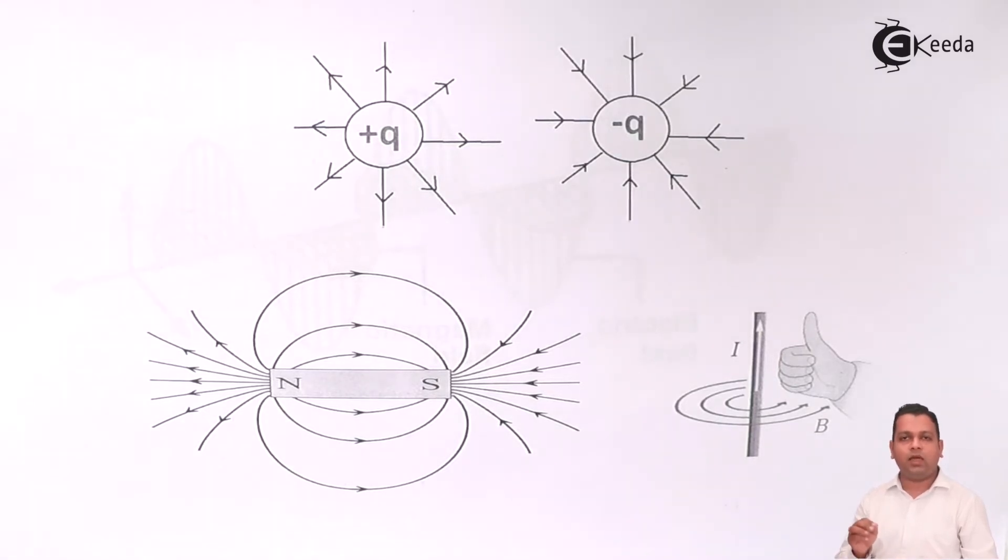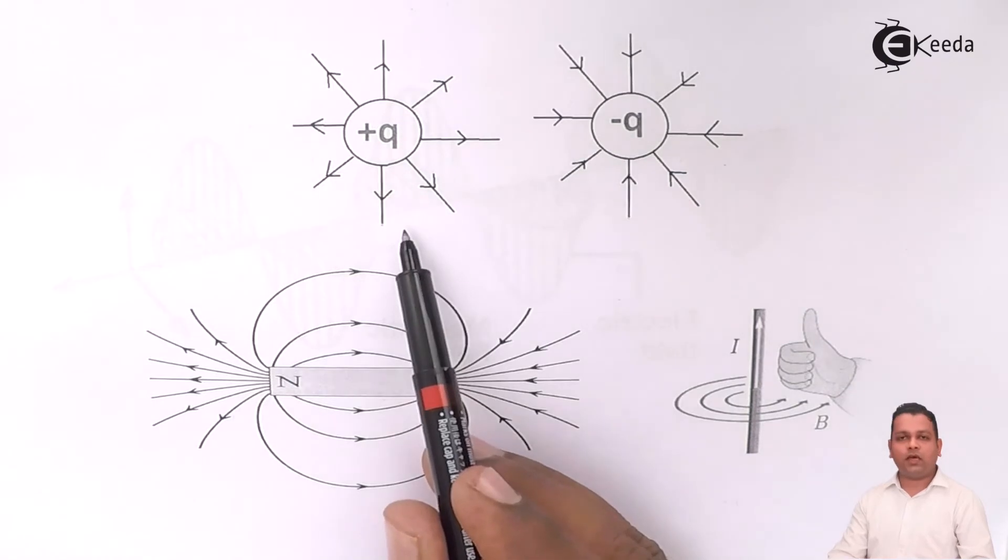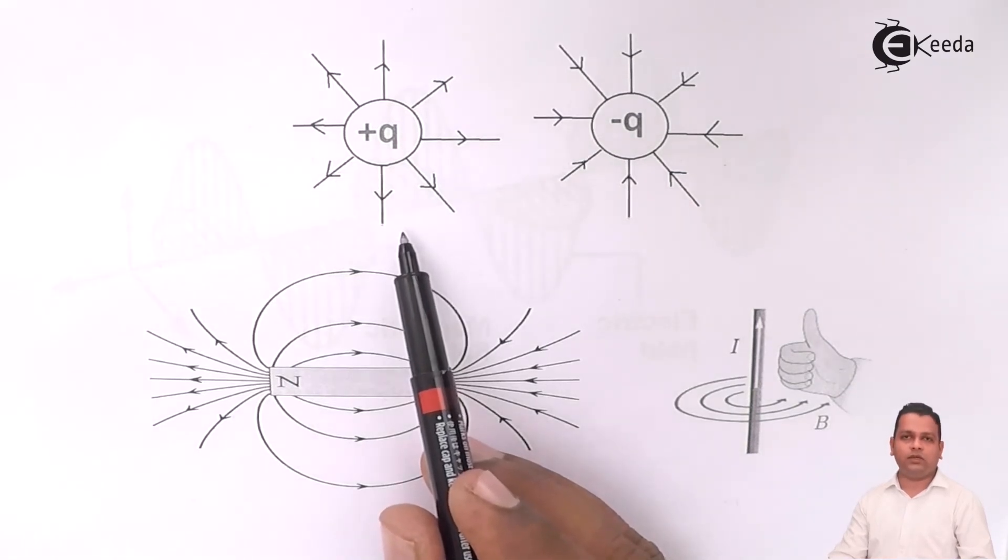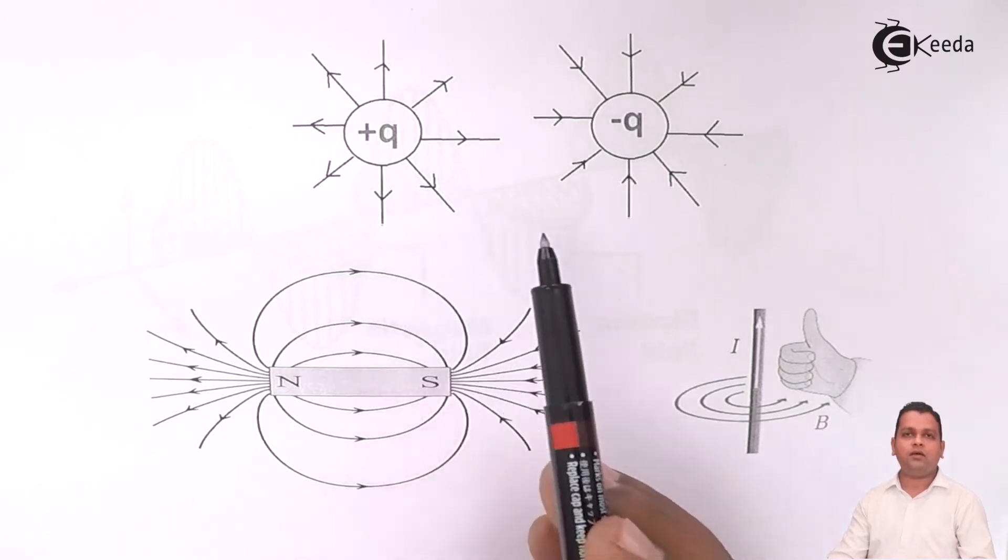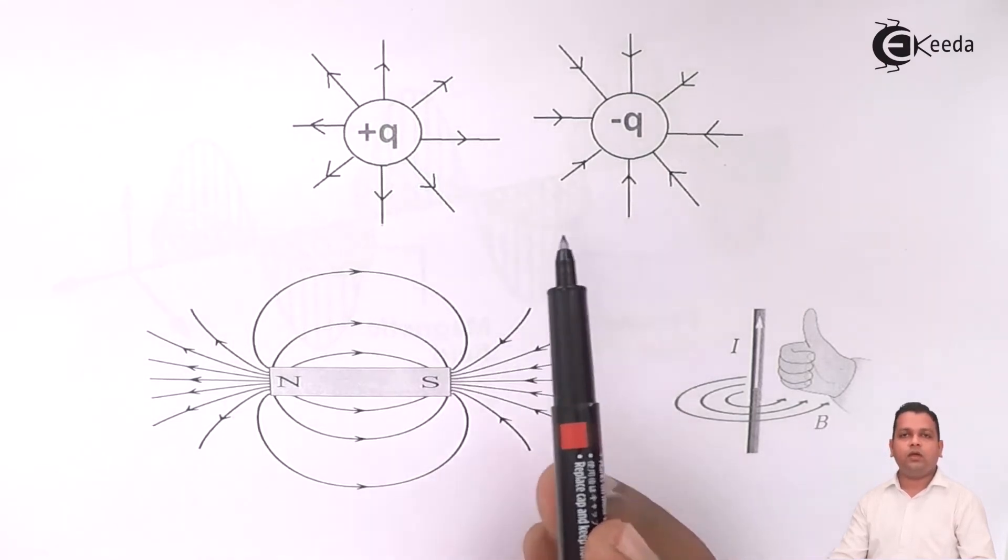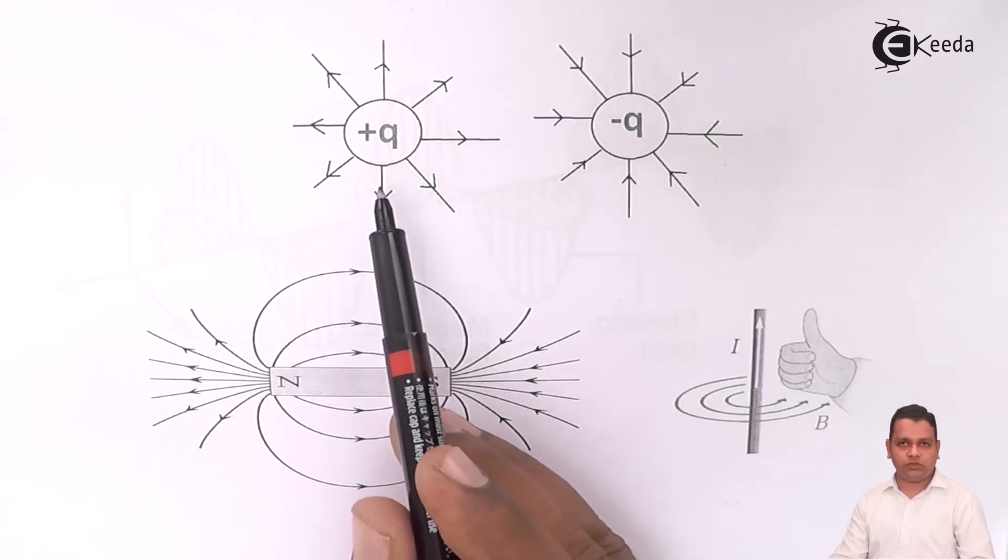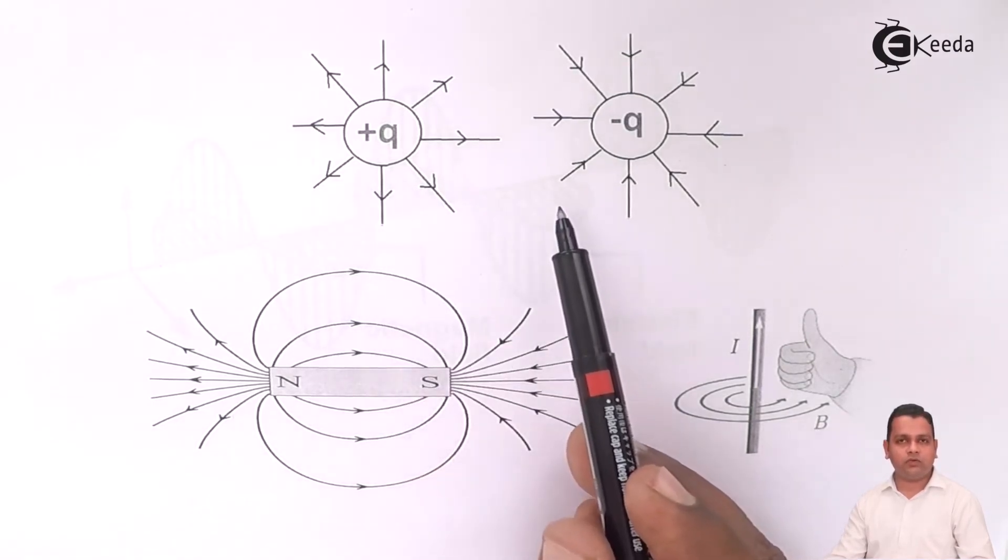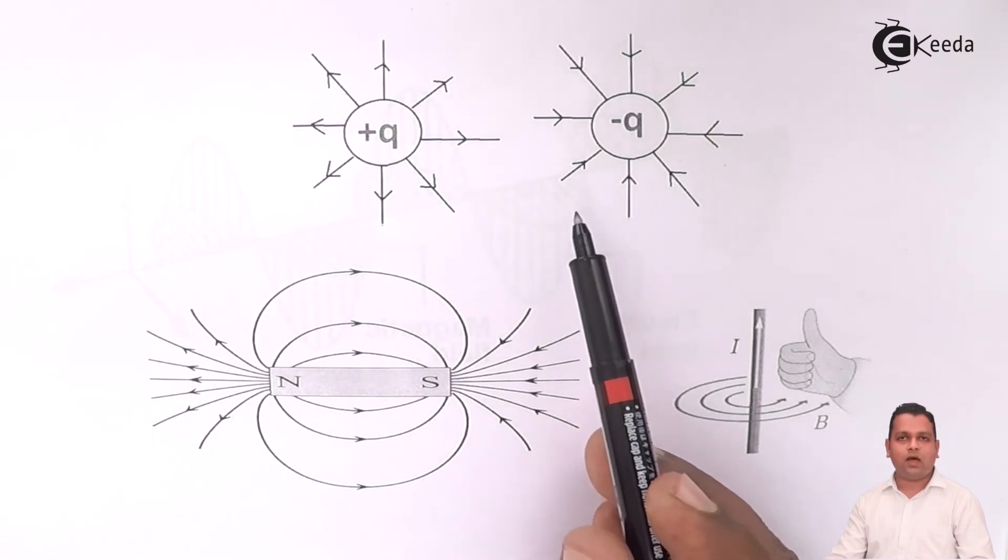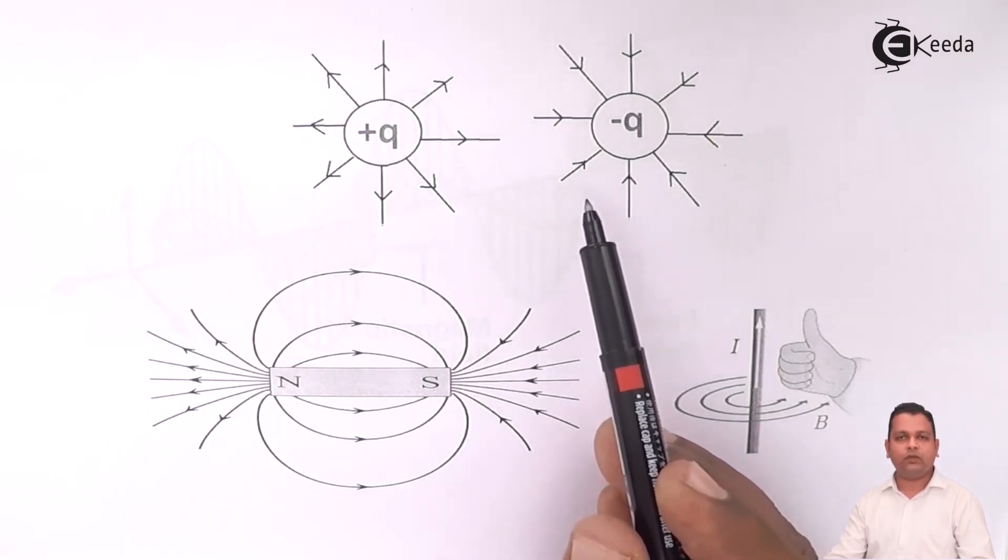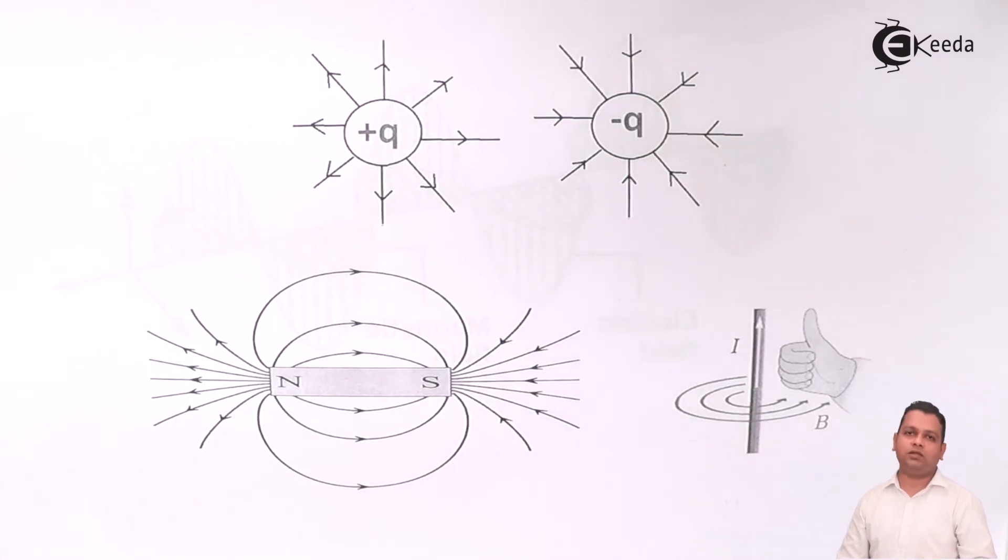In this diagram, we see the two charges denoted by positive Q and negative Q. The lines, what we term as electric flux lines, are always going away from the positive charge. Whereas, in the case of negative charge, these lines are always coming towards it. So, the electric flux lines are always generated on positive charge, whereas they end on negative charge.